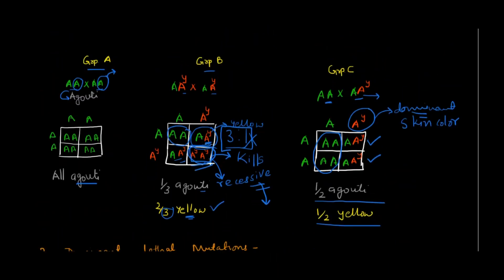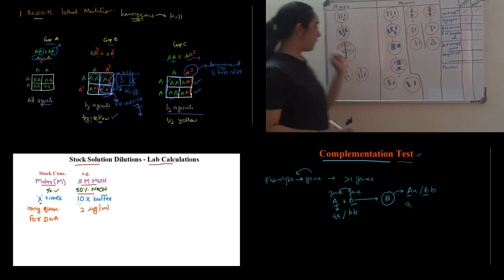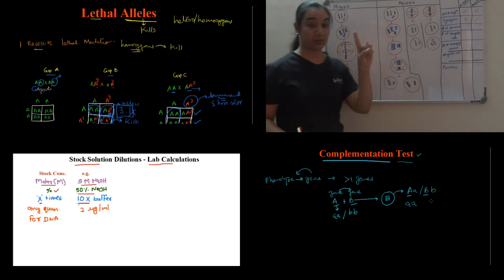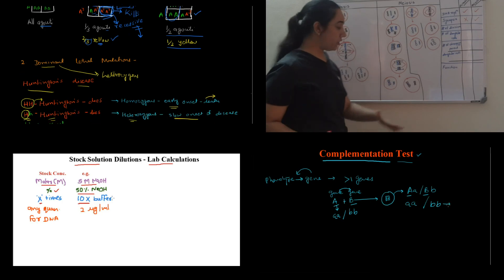To summarize: in recessive lethal mutation, one allele in heterozygous condition only interferes with the phenotype — it does not kill the individual. But in dominant lethal mutation, even one lethal allele in heterozygous condition gives rise to disease. That's all about lethal alleles. I hope this video was helpful — do subscribe to the channel for a new video every week, and keep learning!